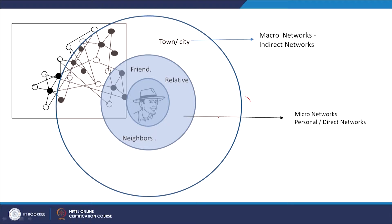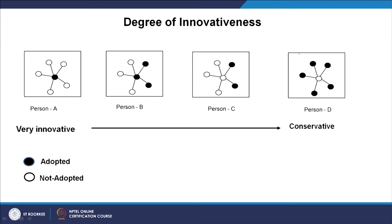Micro-level networks are more reliable because someone can come and check directly — like at IIT, if someone buys a computer, they receive calls asking for feedback and price details. At the macro level, you look at whether something has been implemented in Delhi or Roorkee. This is how we look at both scales.